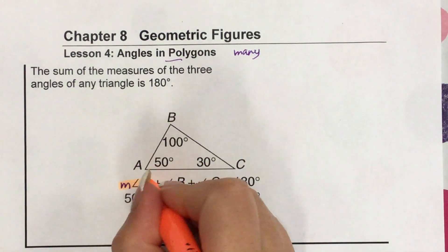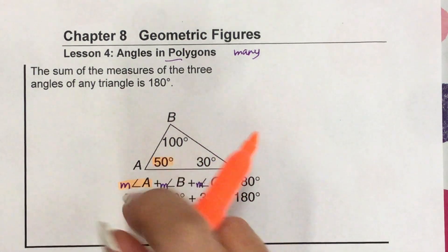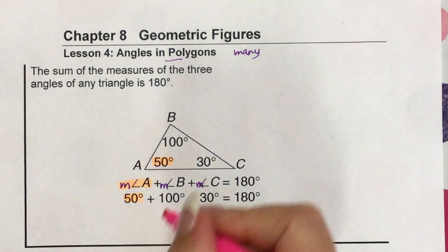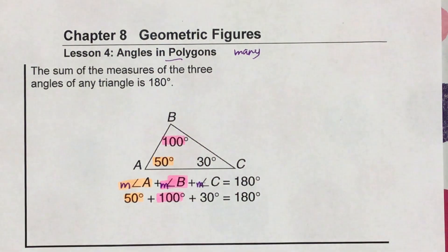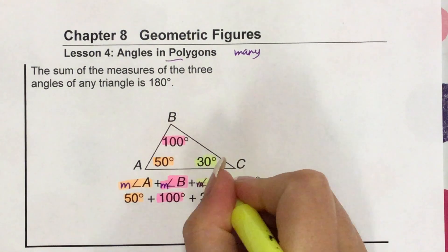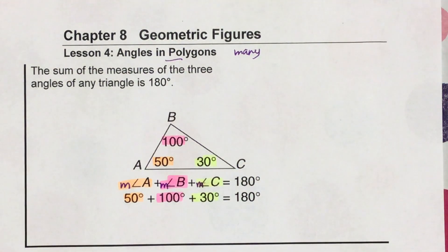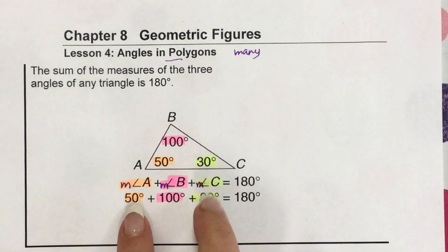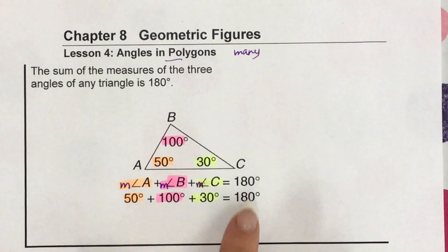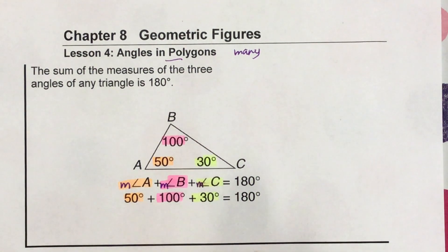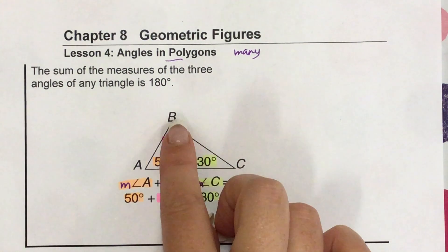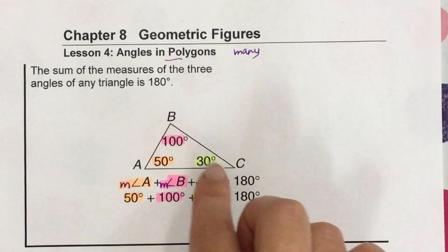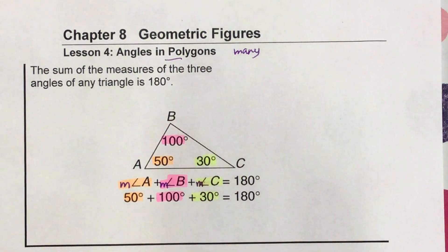So if we take the measure of angle A plus the measure of angle B plus the measure of angle C, all of these things equal 180. The measure of angle A is 50, the measure of angle B is 100, and the measure of angle C is 30. If you go 50 plus 30 is 80, 80 plus 100 is 180 degrees. And that is true for every single triangle — they're always going to equal 180 degrees.